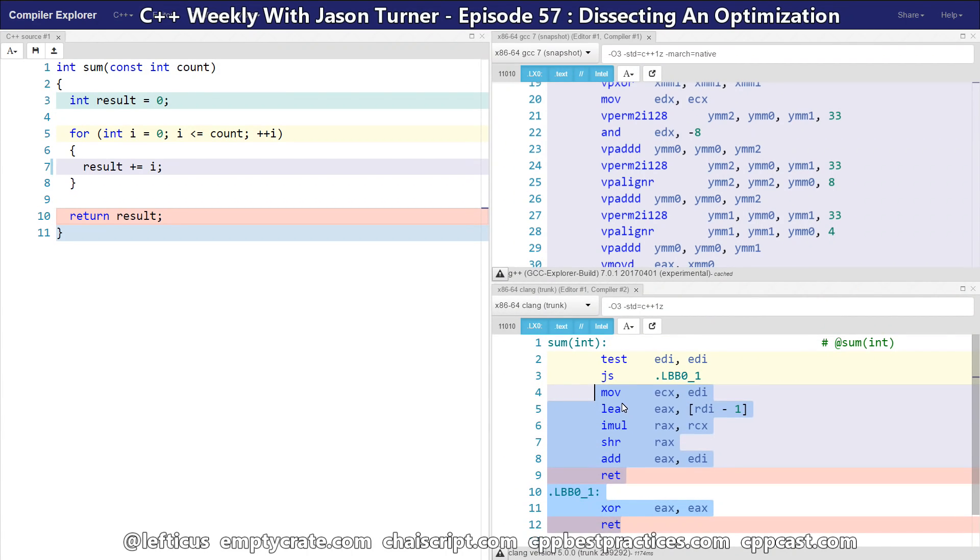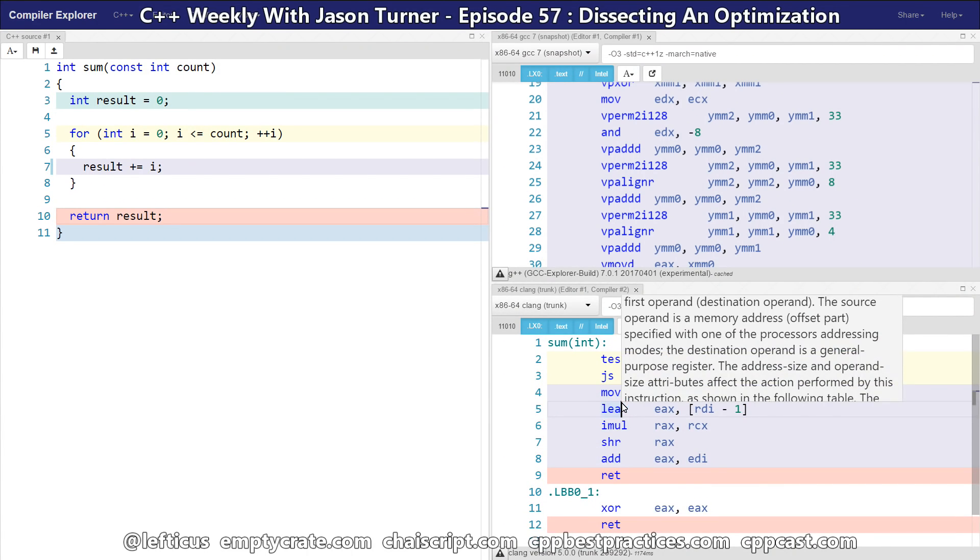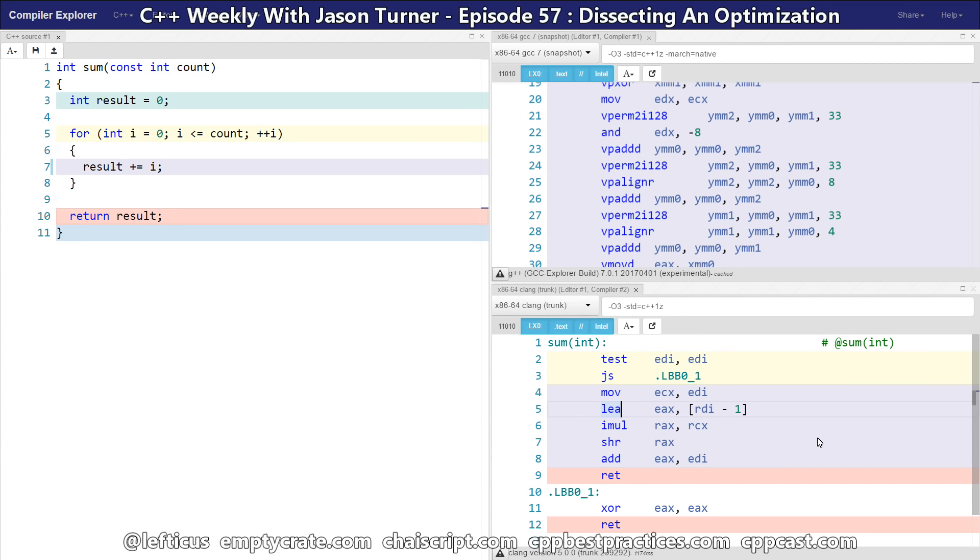And the question is basically, if Clang is not using SSE, how is its code better than GCC's? And the answer is actually pretty simple. And to show you the answer I'm going to actually walk through what each line of this assembly is doing.